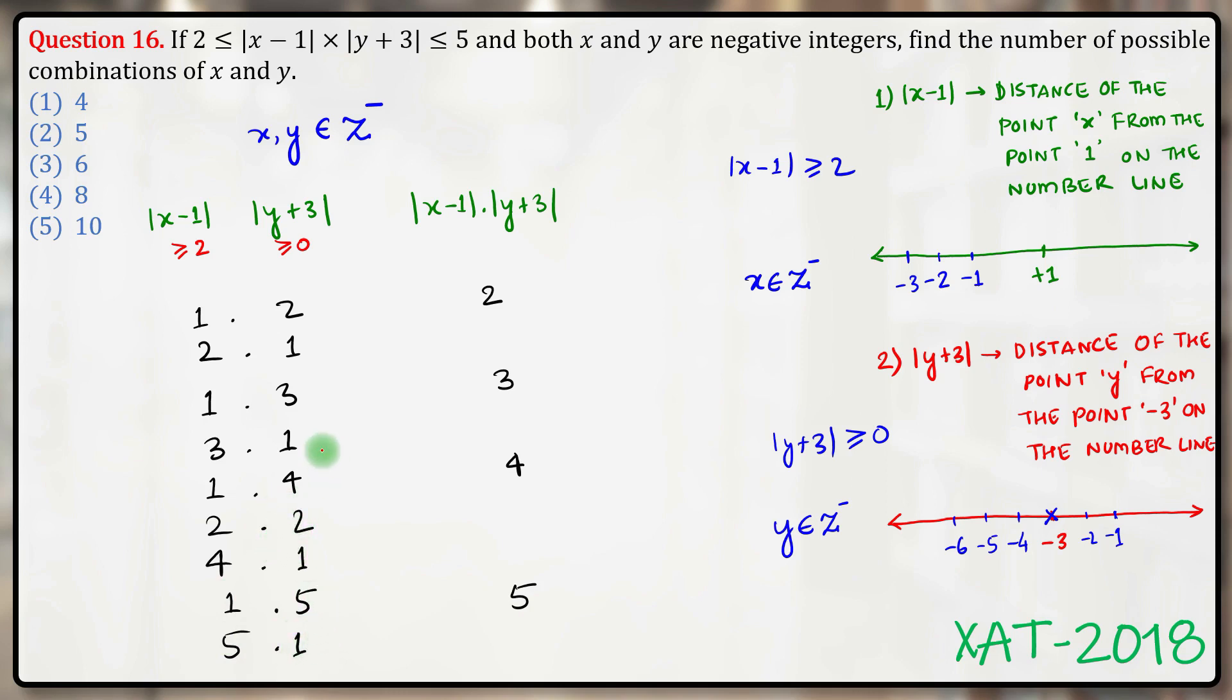However, we already knew that mod of x minus 1 must be greater than or equal to 2, which means we can eliminate this case, this case, this case, and this case. So we are left with only these cases.